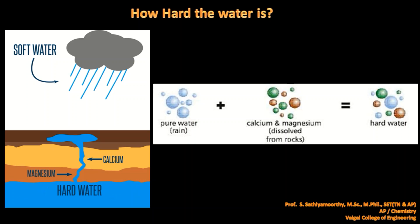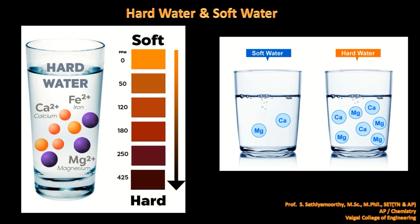Now we are going to differentiate between soft water and hard water. In the image you can see how soft and hard water differ based on the amount of calcium and magnesium salts present. If it is soft water, it should not contain any calcium and magnesium ions — that means zero ppm of calcium and magnesium salts. If it contains a higher amount of calcium and magnesium salts, then the water becomes more hard.